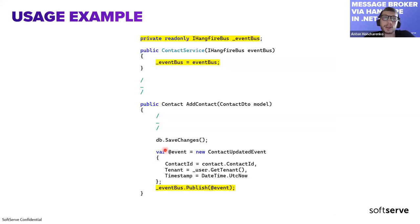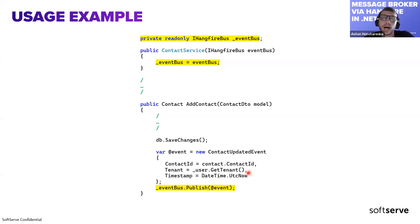Here's a real usage example. You inject your IHangfireBus interface into your core service — which might be legacy code — and call the Publish method. You create your event, for example ContactUpdatedEvent, and pass it to the Publish method. That's it. All other processing is handled by Hangfire — response returns immediately, then after some period of time it starts processing, finds the appropriate handler, and creates another job to actually handle your event.